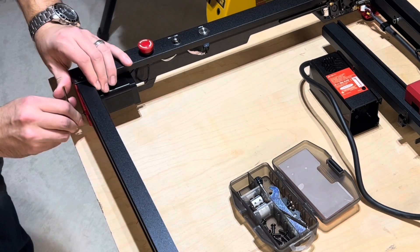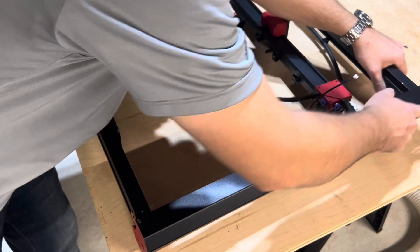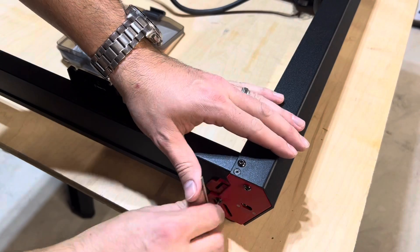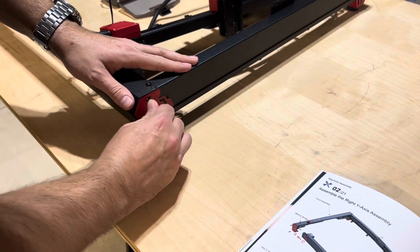Algo laser is two for two so far. Along with it being packaged very well, they also have the bulk of the laser engraver pre-assembled to make assembly quick and easy.